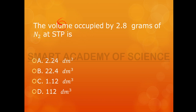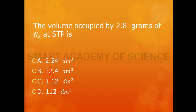At STP, we have to find the volume of N2 — the nitrogen molecule — whose mass is 2.8 grams. Option A is 2.24 dm³, option B is 22.4 dm³, option C is 1.12 dm³, and option D is 1.12 dm³. Now we will see what the answer is.